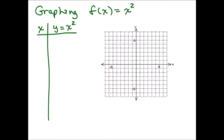I'm going to take the most basic quadratic function, f of x equals x squared — or you could think of that as y equals x squared — and we're going to graph it. So let's make a little chart over here. We'll pick some numbers for x, and I suggest you pick some positive and some negative numbers. You could choose any numbers you want for x, and we want to know what x squared is, because y is x squared.